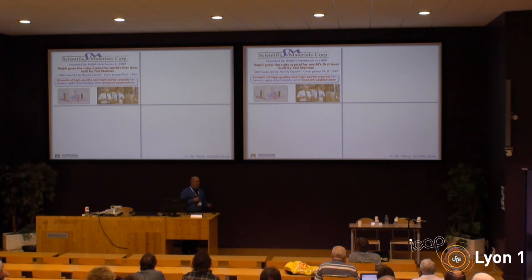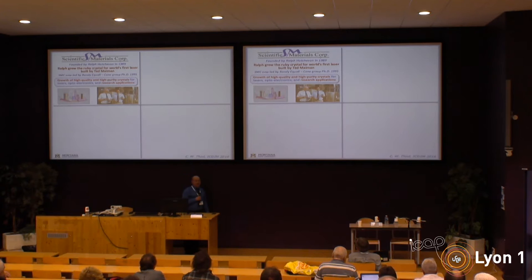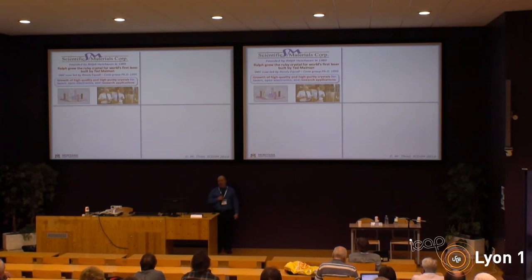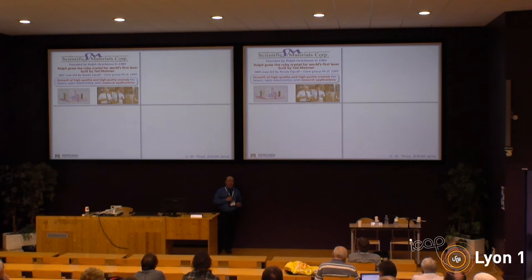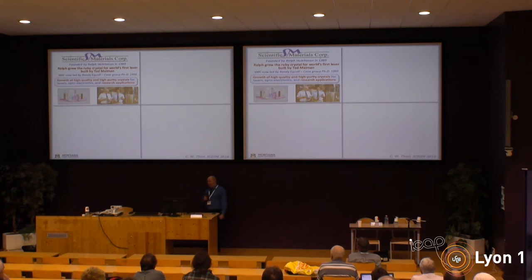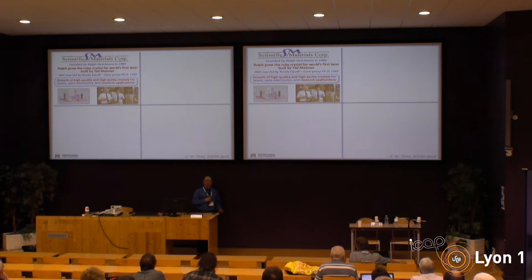One of the first very successful and productive collaborations is with Scientific Materials Corporation, a company founded in Bozeman in 1989 by Ralph Hutchison. He is well known — he's the person who, while working at Union Carbide, grew the very first ruby crystal used by Ted Maimon in the first laser system. He came and started a company growing high-quality laser materials, taking scientific understanding of materials and the growth process to improve quality and consistency, particularly for high-power Nd:YAG lasers. It's an incredibly useful capability to have a company right in town that grows high-quality materials and can feed back directly with the research process at the university.